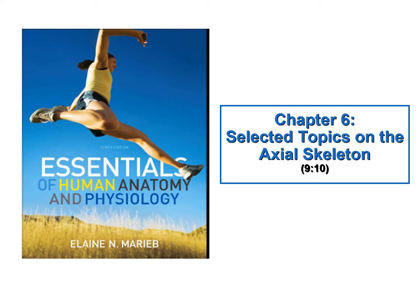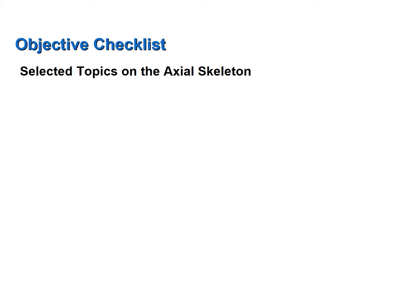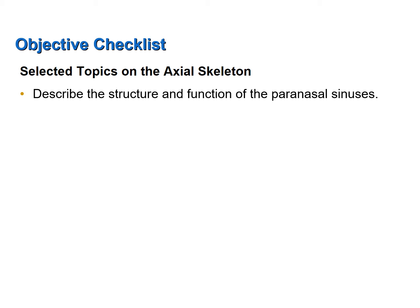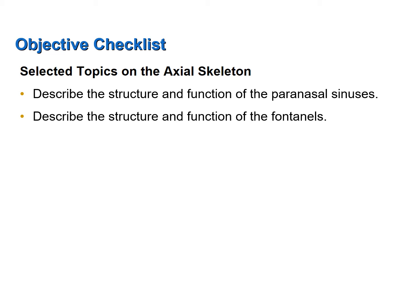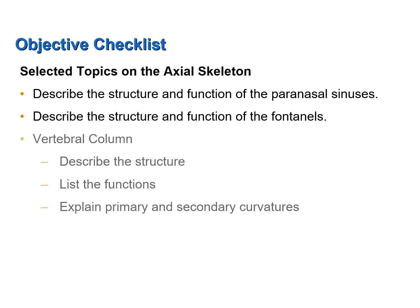This screencast discusses selected topics on the axial skeleton. You may find information on the axial skeleton in Chapter 6 of your textbook. This screencast was designed to help you achieve the following objectives: describe the structure and function of the paranasal sinuses, describe the structure and function of the fontanelles, and for the vertebral column, describe the structure, list the functions, and explain primary and secondary curvatures.